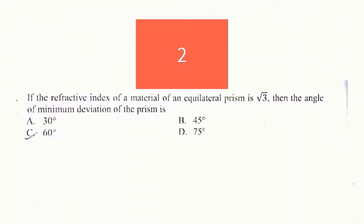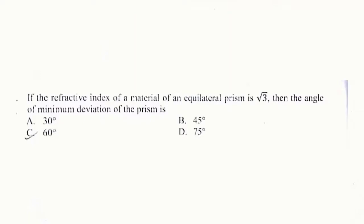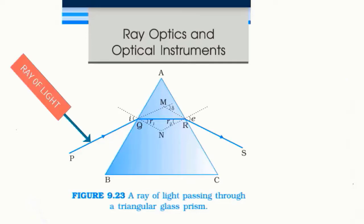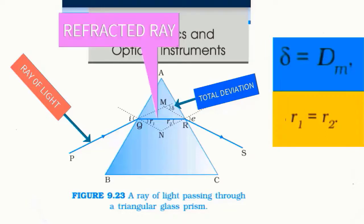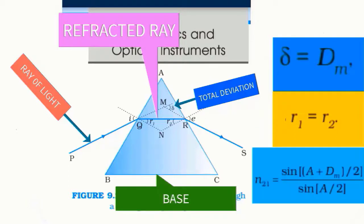In the next question, if the refractive index of the material of an equilateral prism is root 3, then we have to find the angle of minimum deviation of the prism. To solve this question, let us turn to ray optics and optical instruments. Here we can see a ray of light passing through a triangular glass prism. Total deviation equals minimum deviation when R1 equals R2, that is the refracted ray inside the prism becomes parallel to its base. The refractive index of the prism is given, so we have to find D_M, that is the minimum deviation.